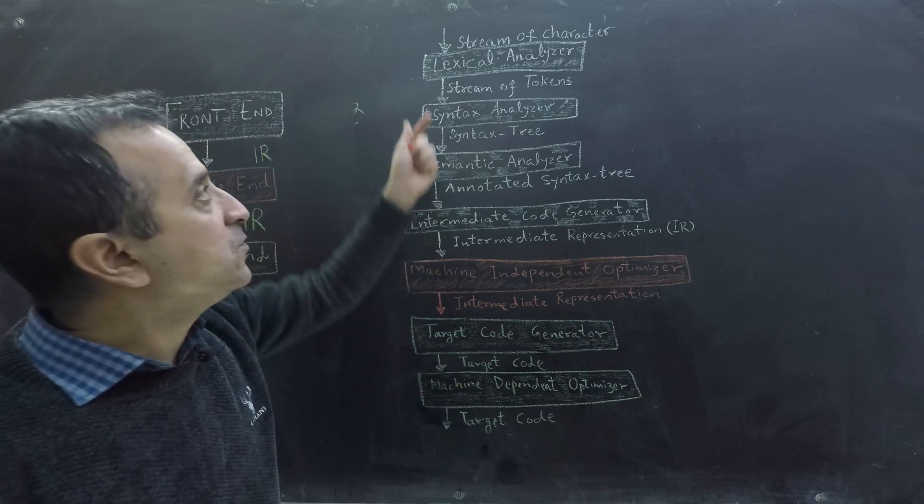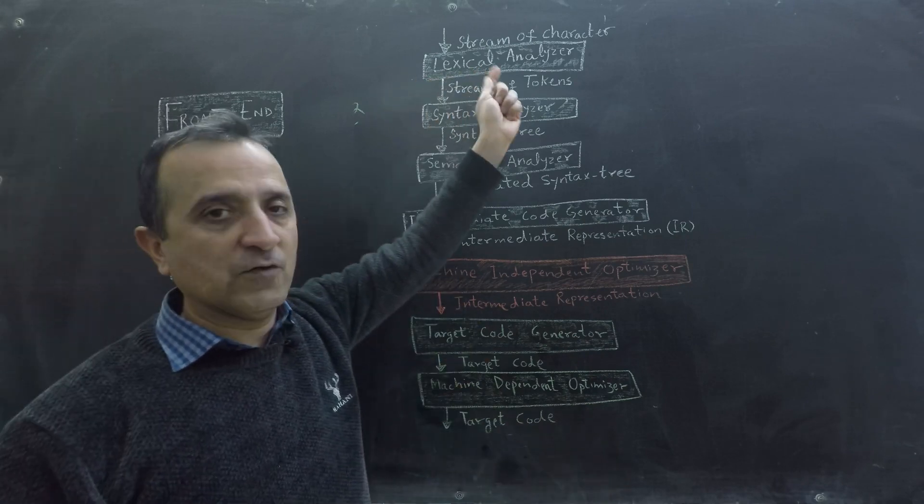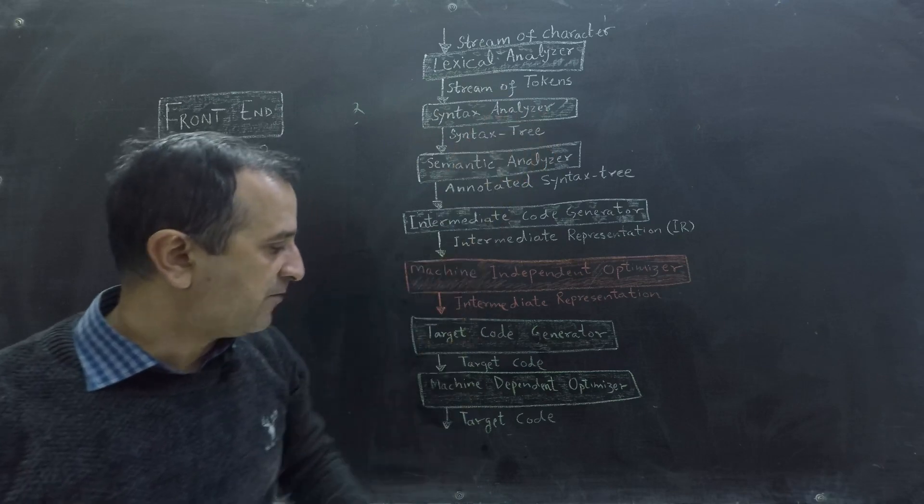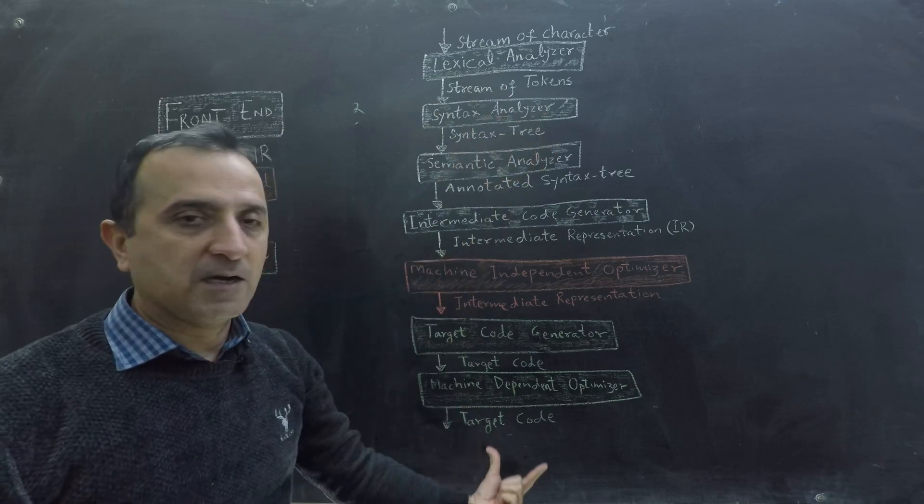So our input of these phases is character streams of source language. Our output is optimized target code.